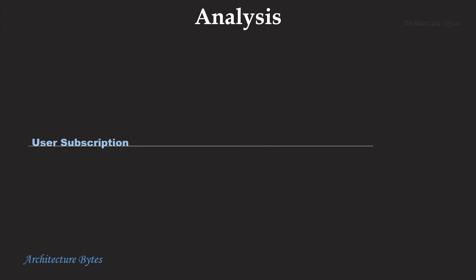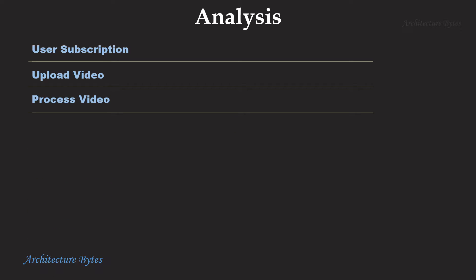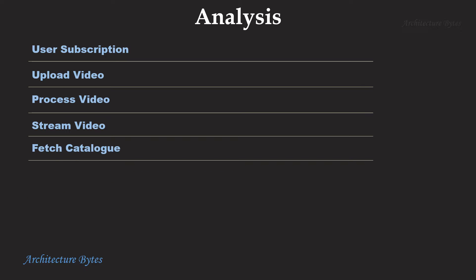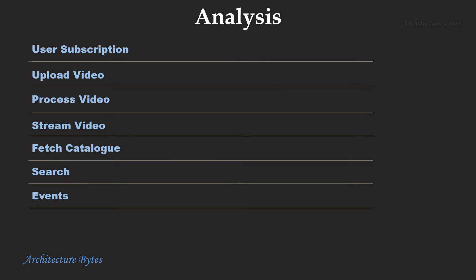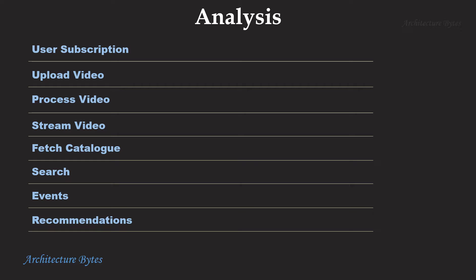At a high level, we need to design for the following functions: user subscriptions, upload video, process video, stream video, fetch video catalog, search, events logging, and recommendations and analytics. Here are the services that we would need for every function.